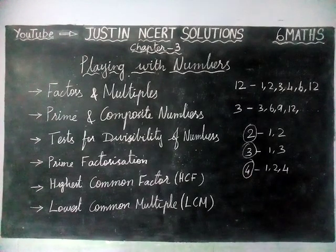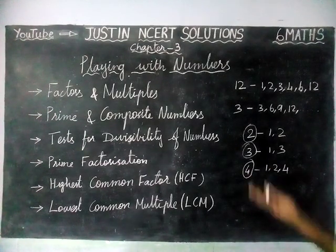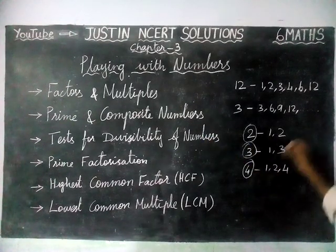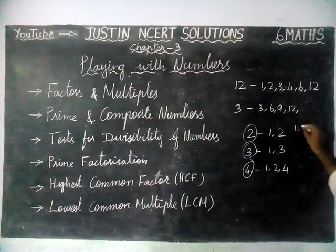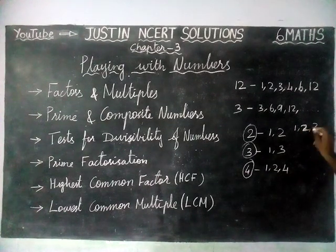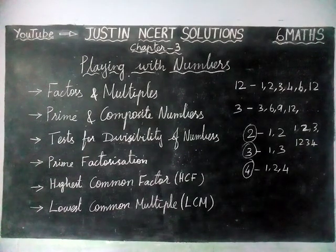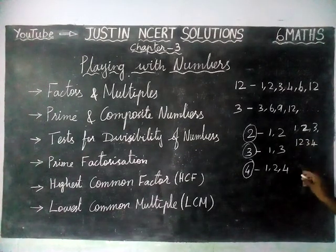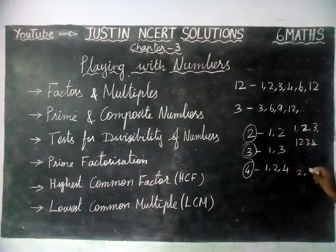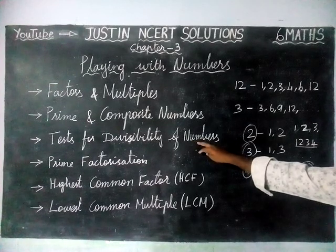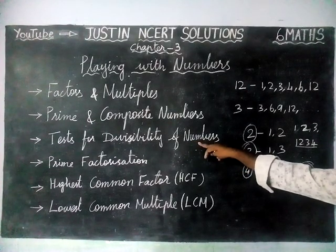And next one, test for divisibility of numbers. When we are considering large numbers, there are rules. For example, if you are taking the number 1,234, this number can be divisible by 2 and it can be divisible by 4. We can say it by seeing the number itself, without actual division. That is having some rules — that only we are going to see in the test for divisibility of numbers.